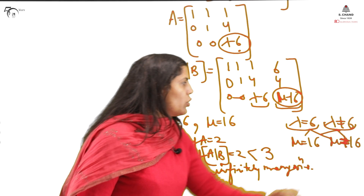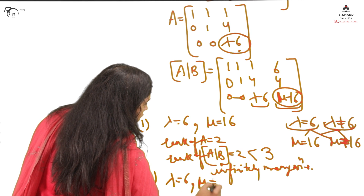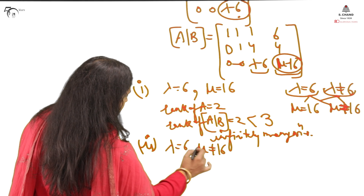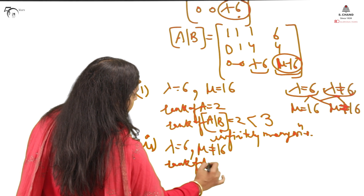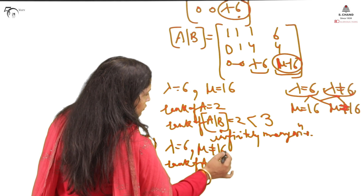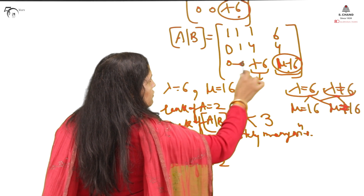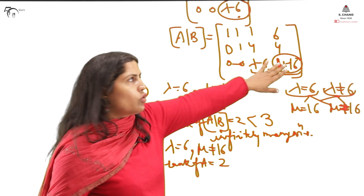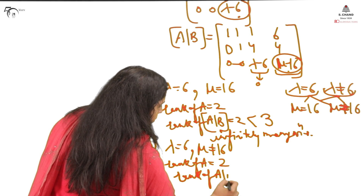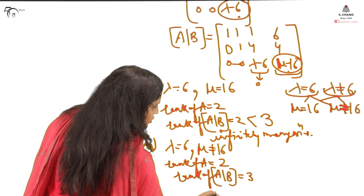Case 2: λ=6 and μ≠16. With λ=6, rank(A)=2 (third row of A is zero). But since μ≠16, the entry μ−16 is non-zero, making the third row of [A|B] a non-zero row. Thus rank([A|B])=3. Since rank(A) ≠ rank([A|B]), the system has no solution.